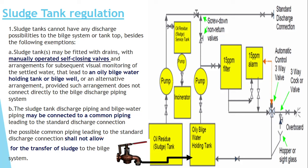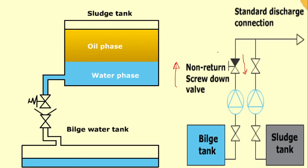The arrangement shall not allow the transfer of sludge to the bilge system. You will have a screw-down non-return valve arrangement. So if anybody asks you, you can say that you can have a common standard discharge connection to the shore, but you should have a screw-down non-return valve in the bilge tank line, to prevent any type of transfer from the sludge tank to the bilge tank internally through the shore connection.